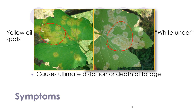The symptoms of a downy mildew infected plant are seen here. On the left you see yellow oil spots that are produced on the adaxial surface of the leaf. On the right you can see what is commonly referred to as white fuzz on the abaxial side of the leaf, which is the primary growth of the pathogen. This disease causes distortion of the foliage and ultimately death of the leaves and other parts of the foliage.